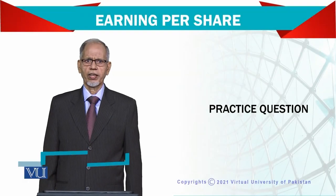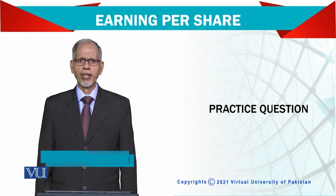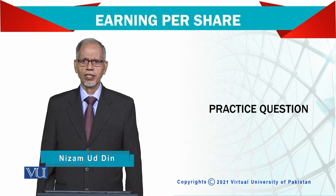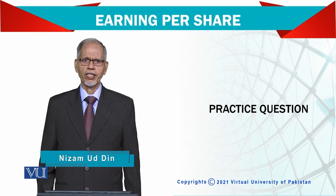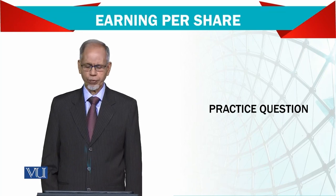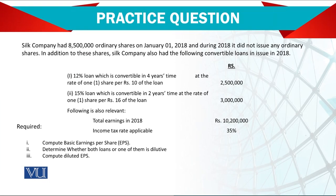We are still on earning per share, and here we are going to talk about conversion of potential shares into ordinary shares and how they affect earning per share. Silk Company has 8.5 million ordinary shares on January 1st, 2018, and during 2018 it did not issue any ordinary share. So at the beginning you have 8.5 million shares.